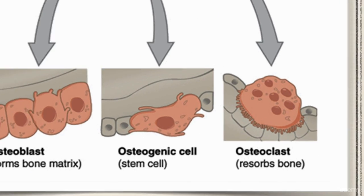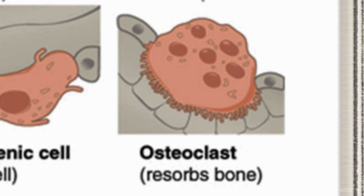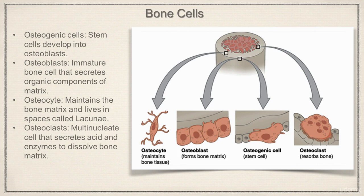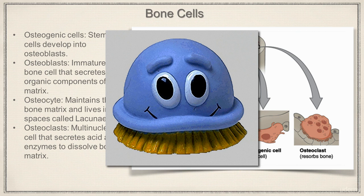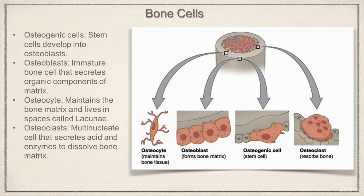Then we have the osteoclasts. As you can see, it's a weird-looking thing — it's a multi-nucleate cell that secretes acid and enzymes. Basically what it does is dissolve bone, it breaks bone down. To me it looks like those scrubbing bubble guys from the scrubbing bubbles commercials, where you spray it on the bathtub and they go about stripping away all the minerals — that's exactly what the osteoclast does.